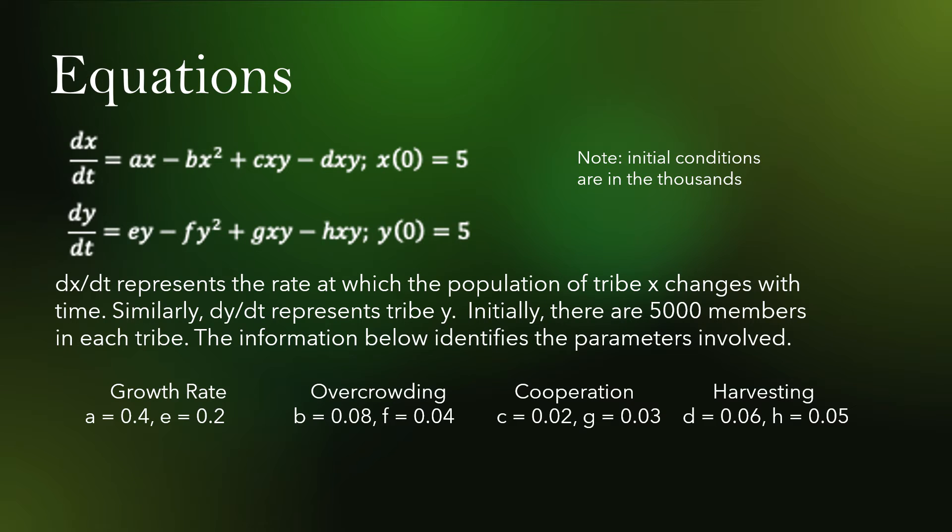Okay, so these are our equations. dX/dt represents tribe X and dY/dt represents tribe Y. Note that our initial conditions are in the thousands, so each tribe has 5,000 members. The variables A and E represent the growth rate. Variables B and F represent the overcrowding factor. Variables C and G represent the cooperation parameter, which is the increase in food stocks each time the two tribes interact. And the variables D and H represent the harvesting parameter, which is the decrease in people each time the two tribes interact.